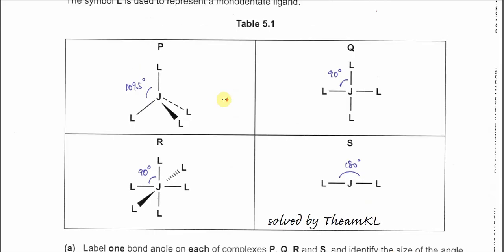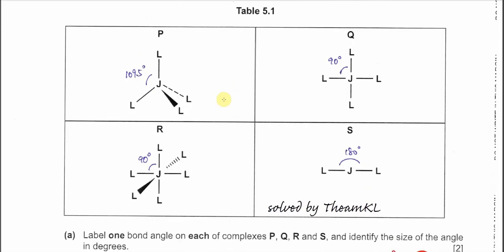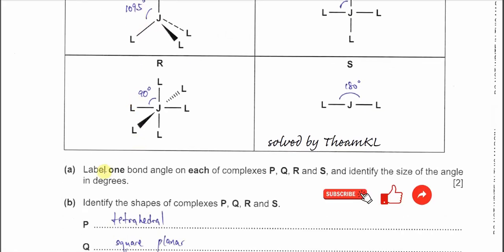For this P, Q, R, S given in table 5.1, for complex P obviously this is tetrahedral. So for part A, label one bond angle on each complex and identify the size of the angle in degrees.